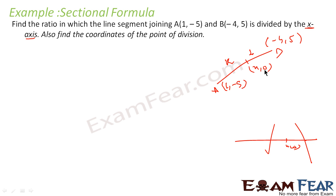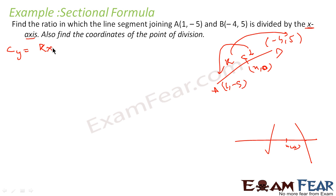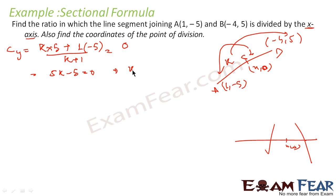Apply the formula to find the y-coordinate, since y = 0 is given. So k into 5 plus 1 into (-5), divided by k + 1 = 0. We get 5k - 5 = 0, so k = 1. That means the line segment is divided in ratio 1 is to 1, meaning this is the midpoint.